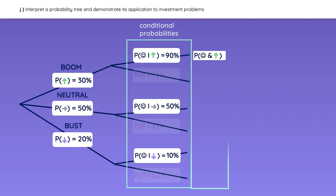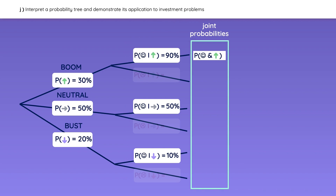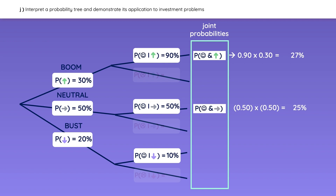What is the joint probability of an economic boom and a happy population? You can use the multiplication rule: the probability of A and B is the probability of A given B times the probability of B. If you don't remember the formula, just multiply across the branch to get the joint probability. Now let's calculate the joint probability of a neutral economy and a happy population, as well as the joint probability of a downturn and a happy population.